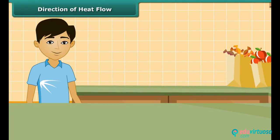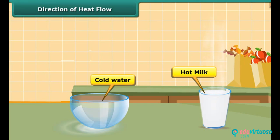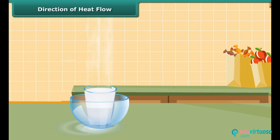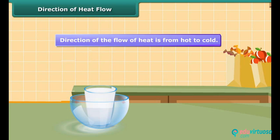Let us perform an activity to understand the concept of direction of heat flow. We place a glass of hot milk in a dish with cold water. After some time, the milk gets cooled and the water gets warm. Both milk and water come to lie at the same temperature. The direction of the flow of heat is from hot to cold.